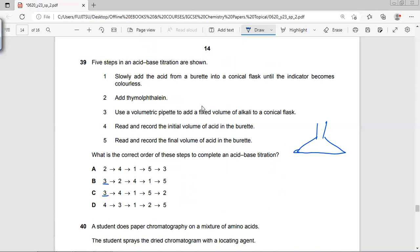And then we can add the indicator first, like a few drops of indicator, so that initial color in the base will be fixed. So why not 4, read and record the initial volume? Well, you are going to add indicator first. You are not going to add the indicator at last.